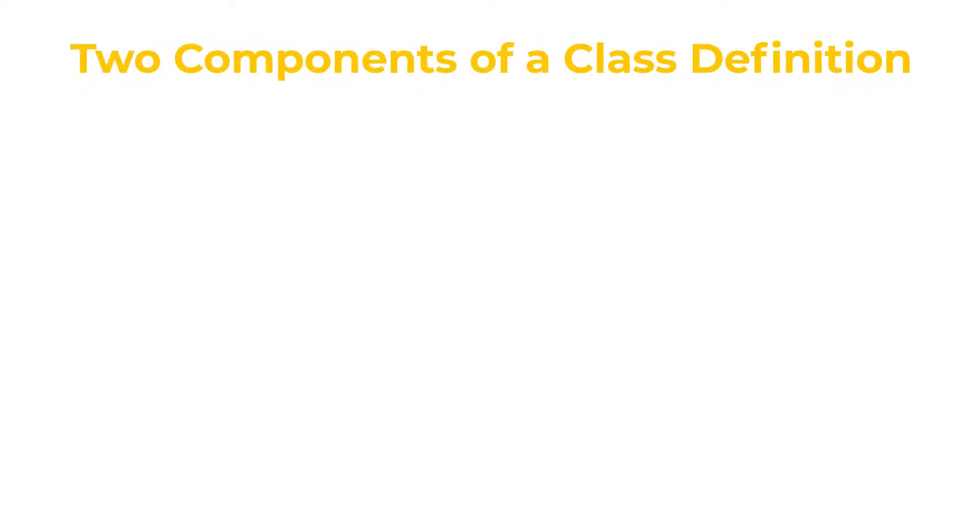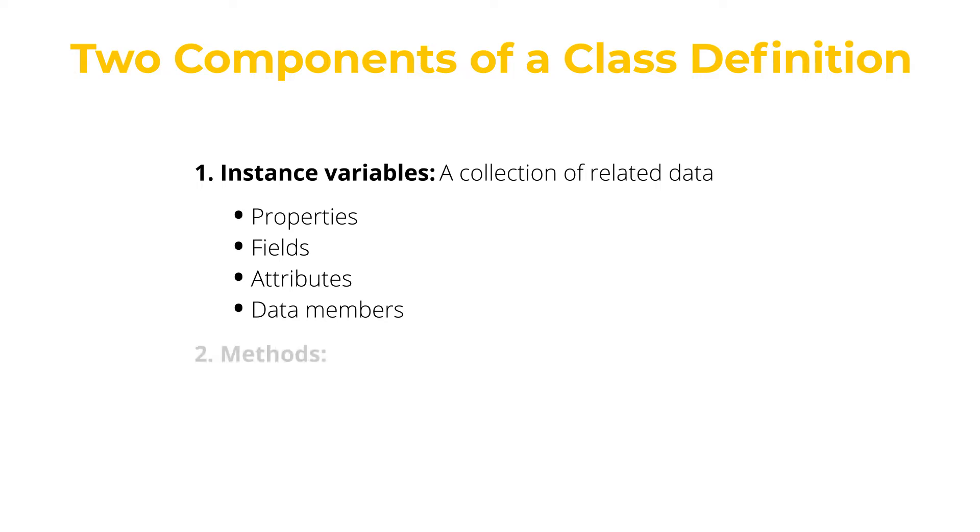A class definition has two main components. The first component is the fields or properties. We have seen how to create objects with certain fields. The second component is methods, which represent the functions or actions that can act on the object.